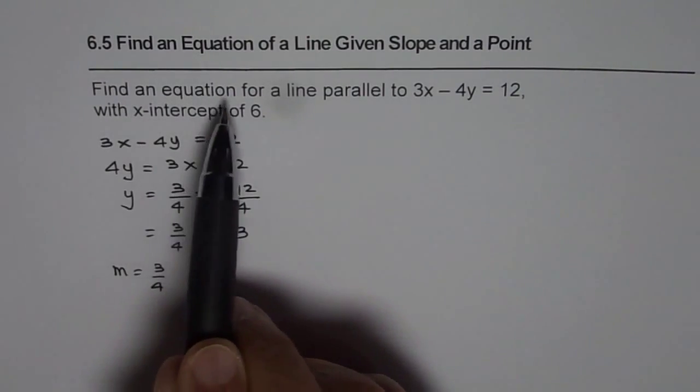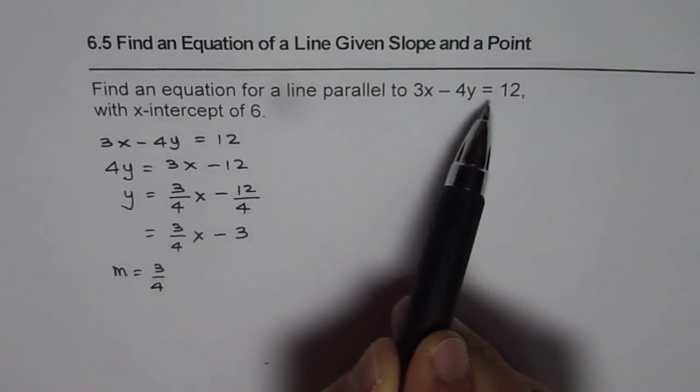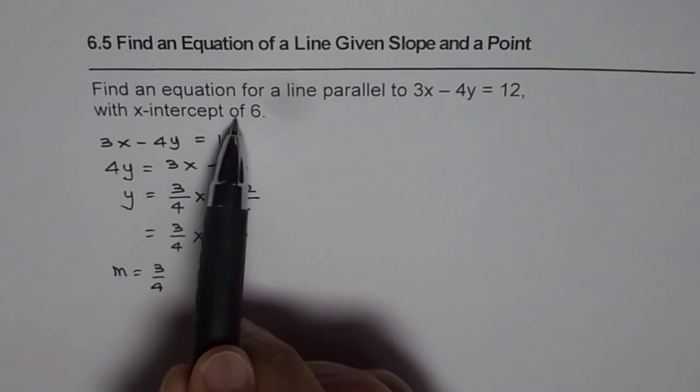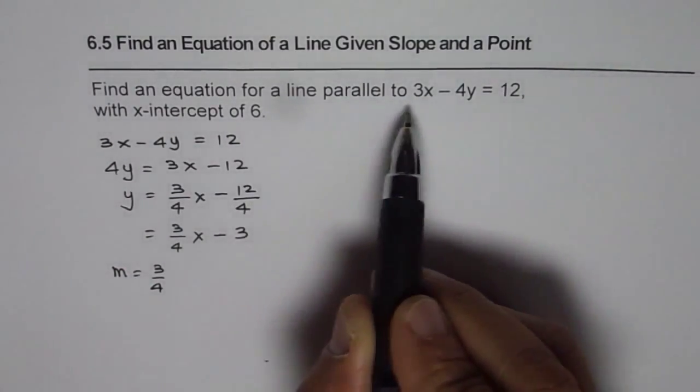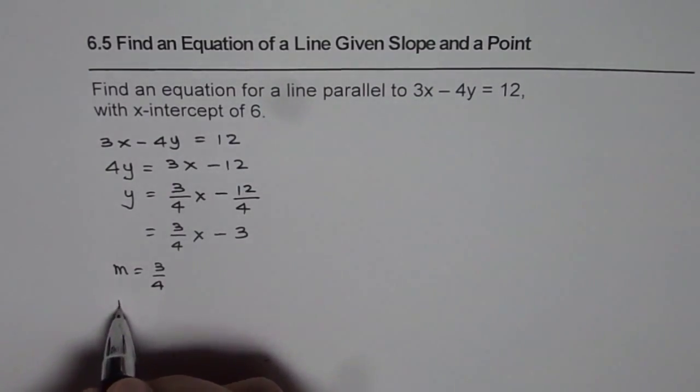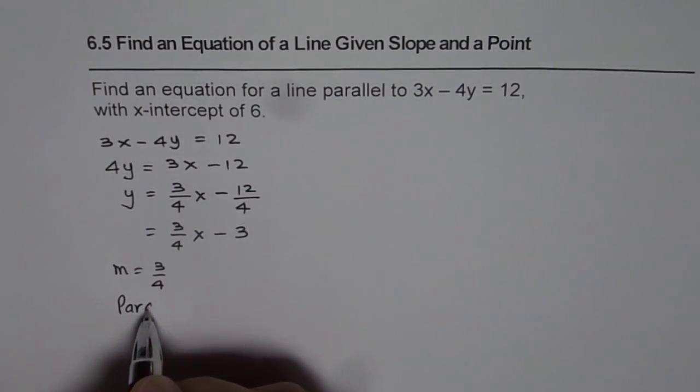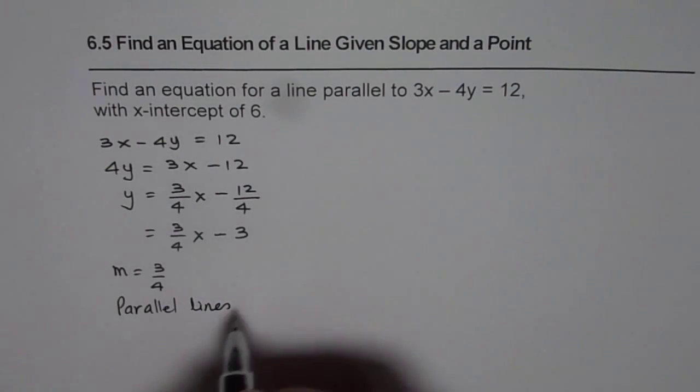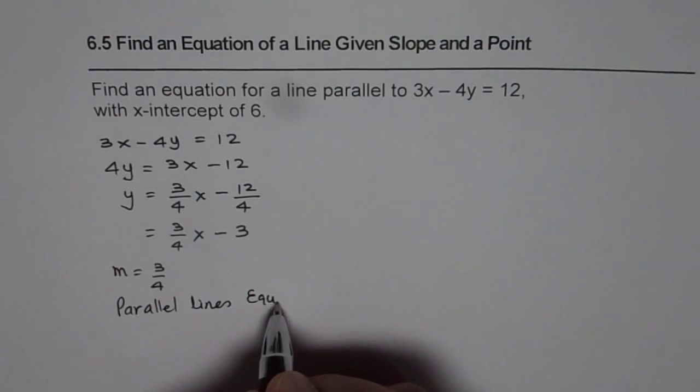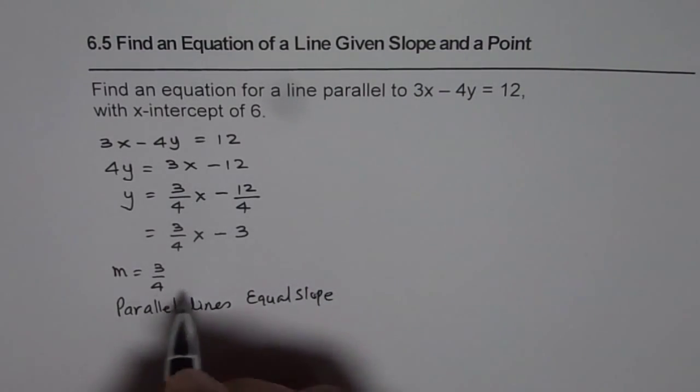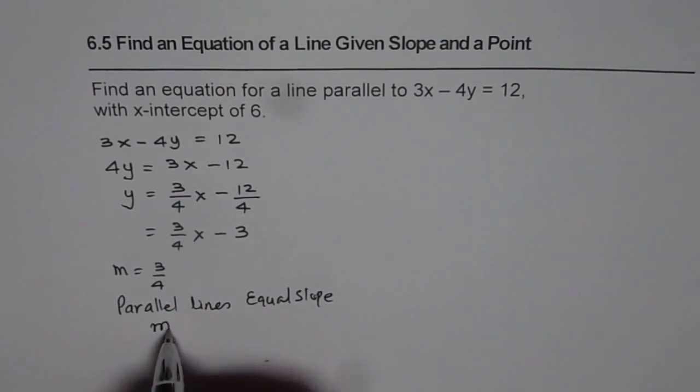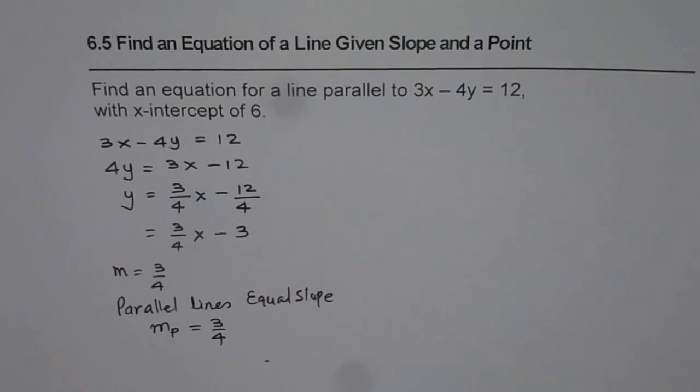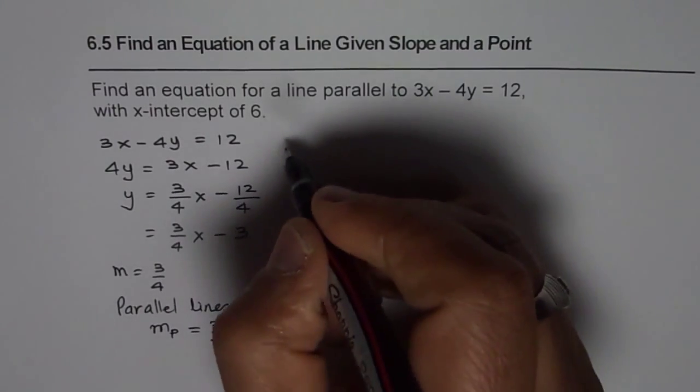Now find the equation of a line parallel to this with x intercept of 6. So when we say equation of the line parallel, parallel lines have same slope. And therefore, our slope of parallel lines, let us call it p, will be same as 3 over 4. So we found that the slope of the line should be 3 over 4. That is the first thing.